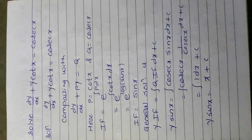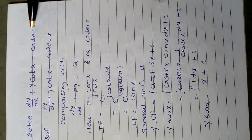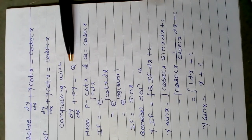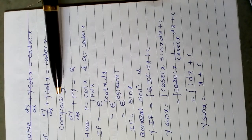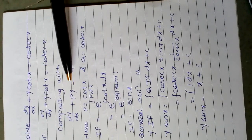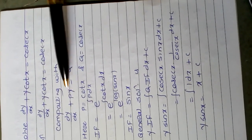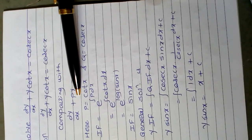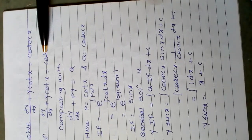Now let us see one more example: dy/dx plus y·cot(x) equals cosec(x). The given equation is already in the standard form of a linear differential equation, dy/dx plus Py equals Q. Comparing, we get P equals cot(x) and Q equals cosec(x).